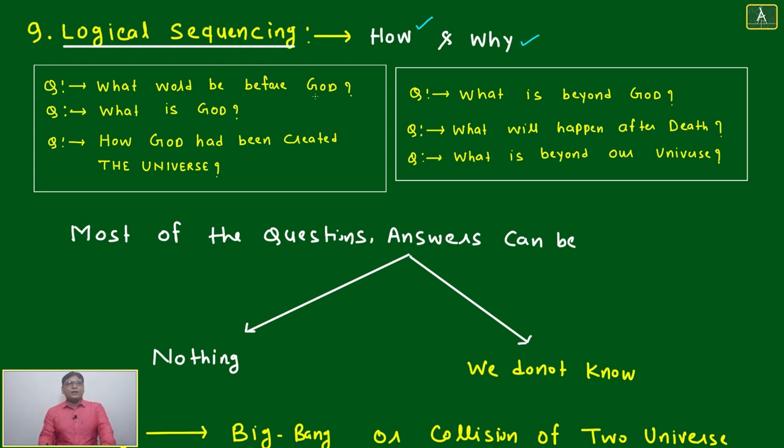What would be before God? I don't know. What is God? I surrender, I don't know. God is everything. How had God been created? How was this universe created? What is beyond God? What will happen after death? We are alive, that itself is a great gift. After death, our brain is not capable to think. What is beyond our universe?